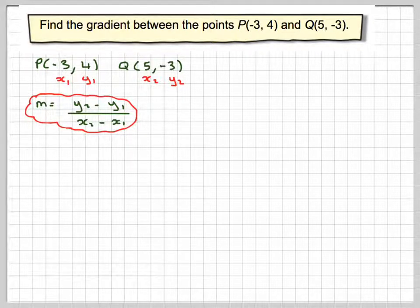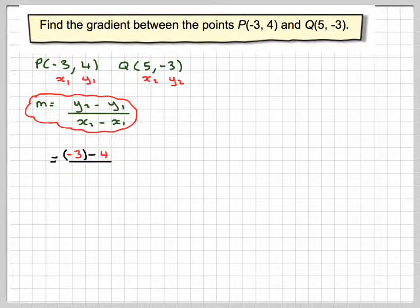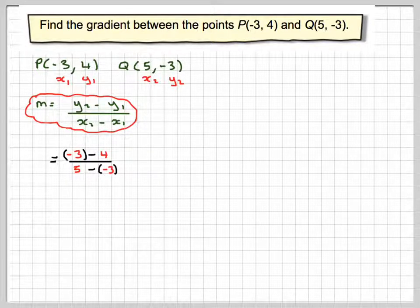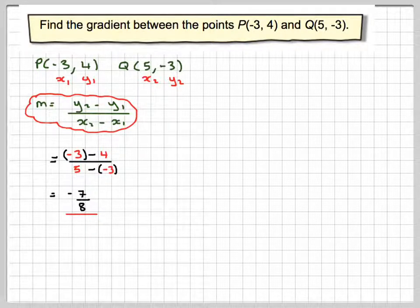Using the coordinates, we need to be careful with brackets. So it's minus 3 minus 4, divided by 5 minus minus 3. That gives us minus 7 divided by 8.